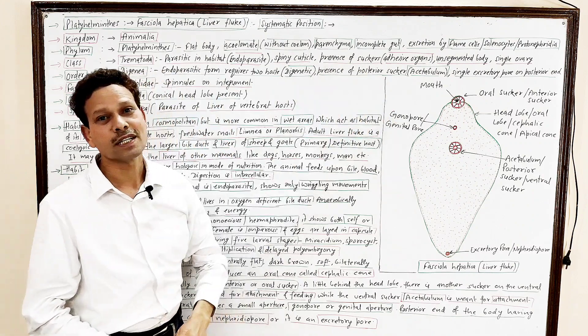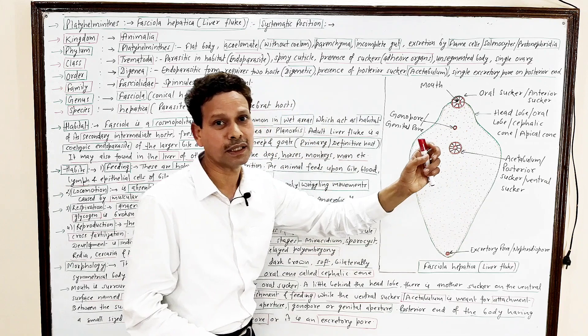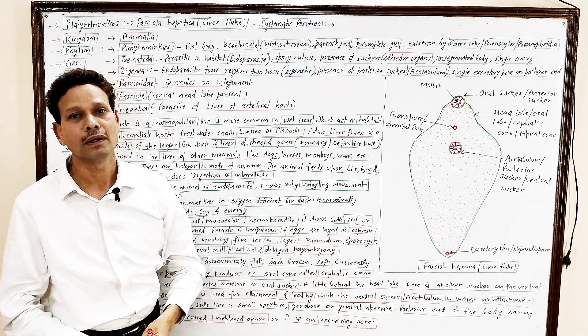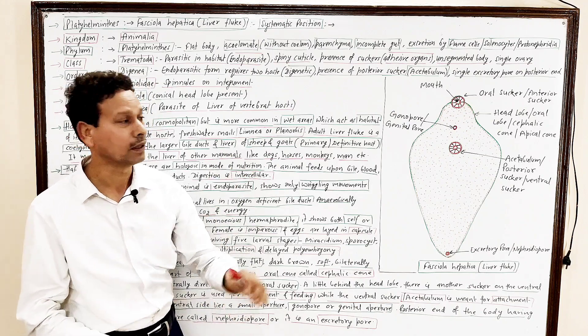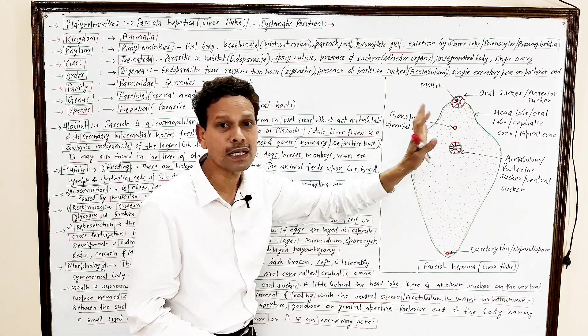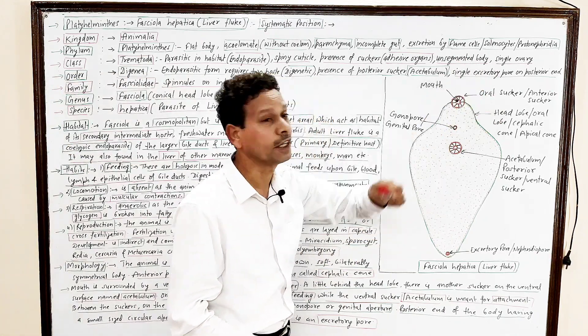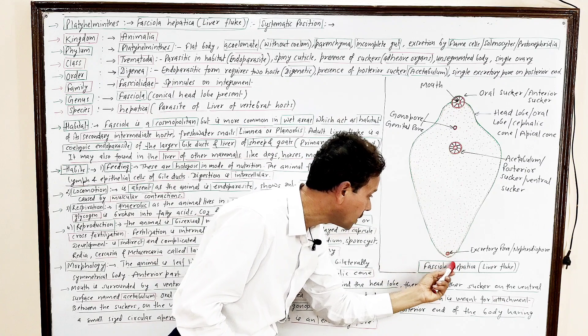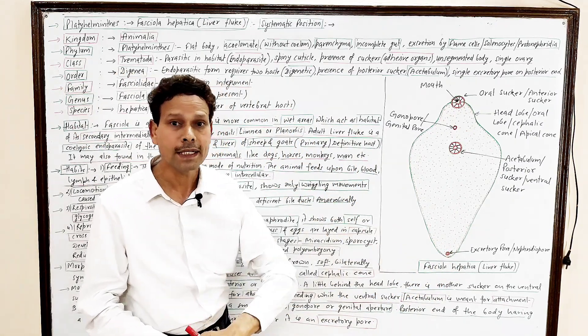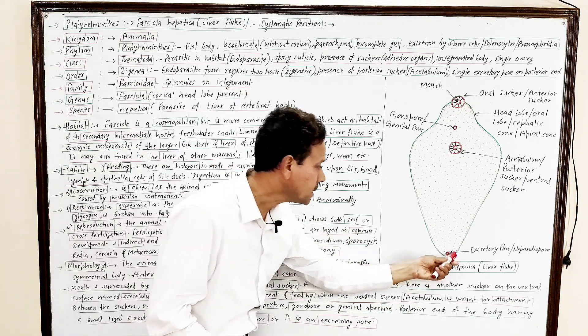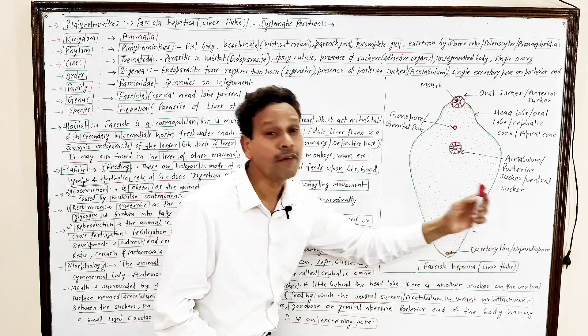Presence of posterior sucker. Note down, this one is, this is the posterior sucker. Strictly it is meant for fixation, fixation, attachment. It is adhesive organ by which this parasite gets attached to host surface. Single excretory pore on this posterior region. Single excretory pore, no anus. Note down, this is excretory pore. It is nephridiopore.